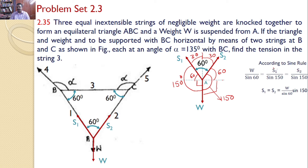So S1 = S2 = (W / sin 60) × sin 150, which gives the value of 0.577W. Our interest is to find the force in string 3, that is S3. To analyze that, we can take either point B or point C. Let us consider point B.